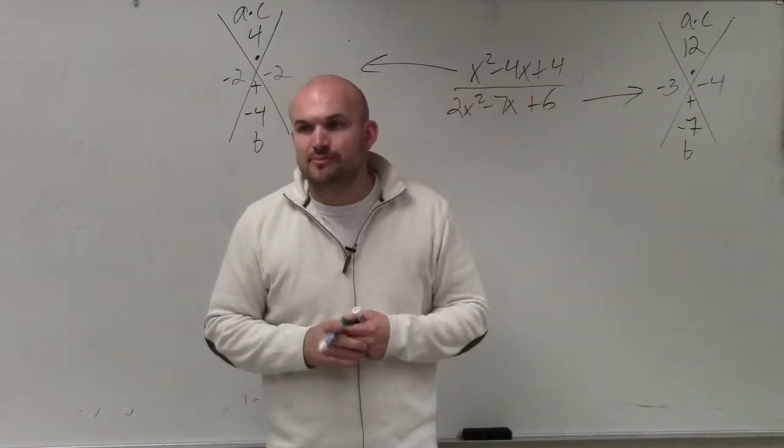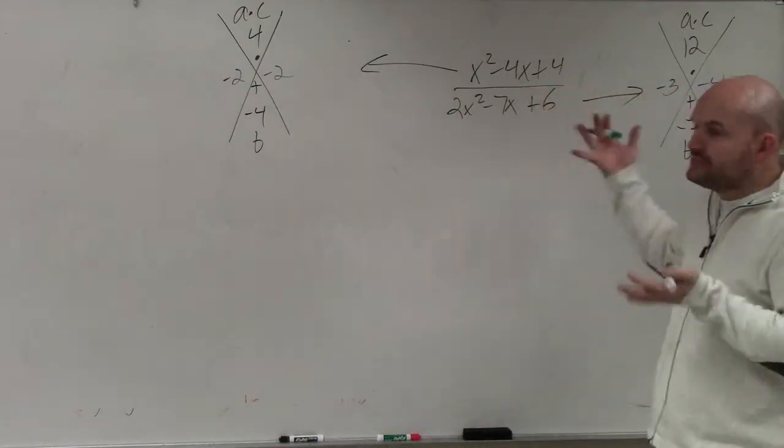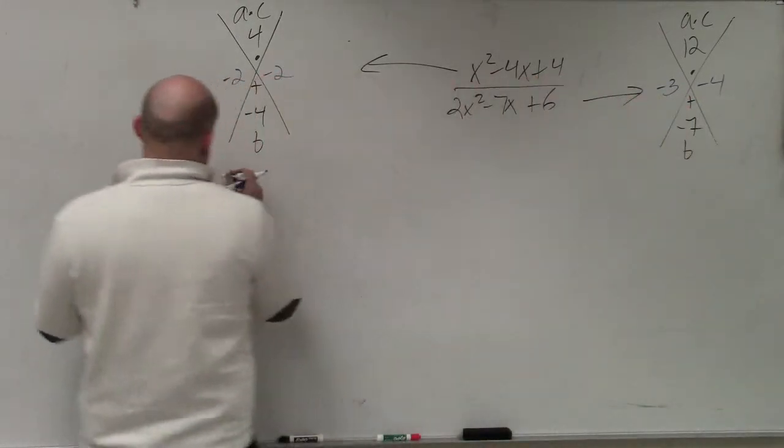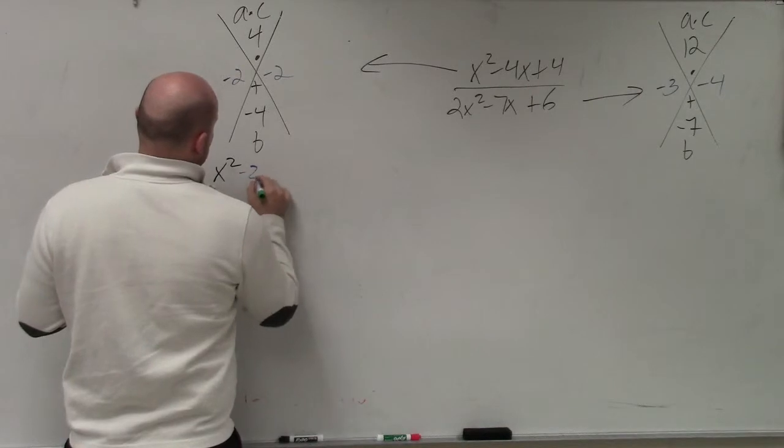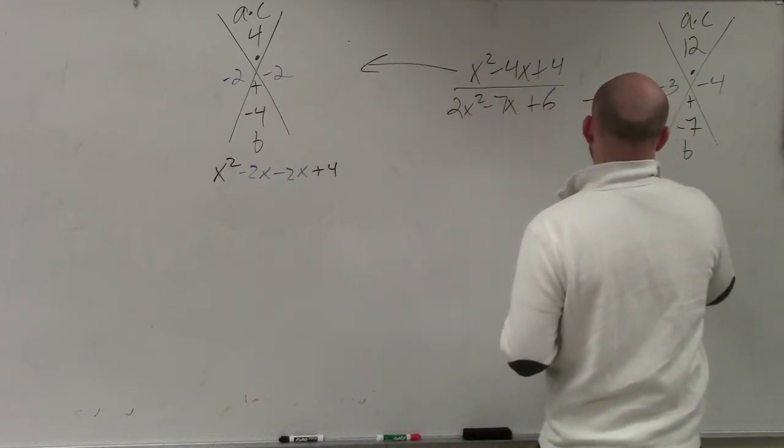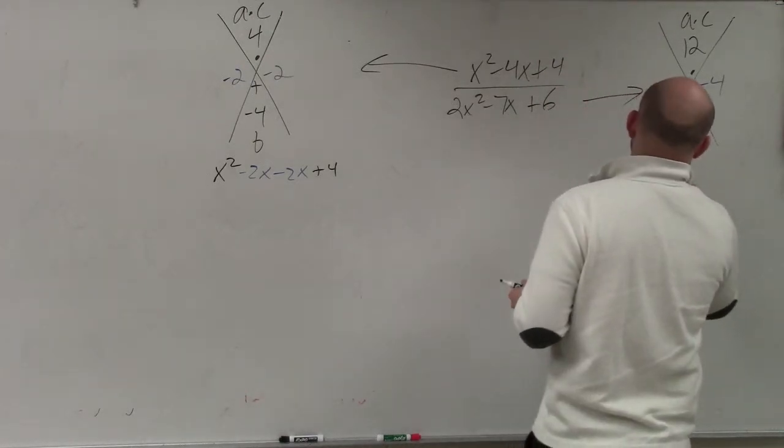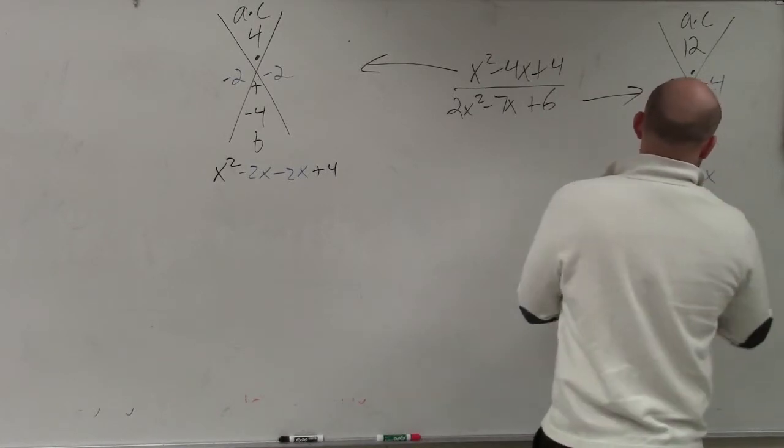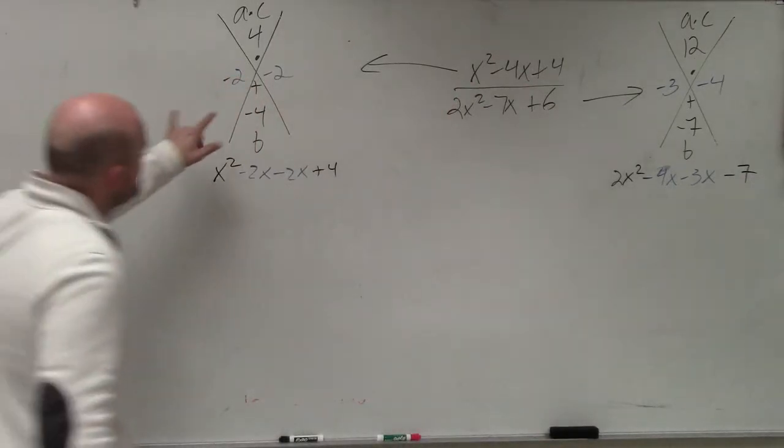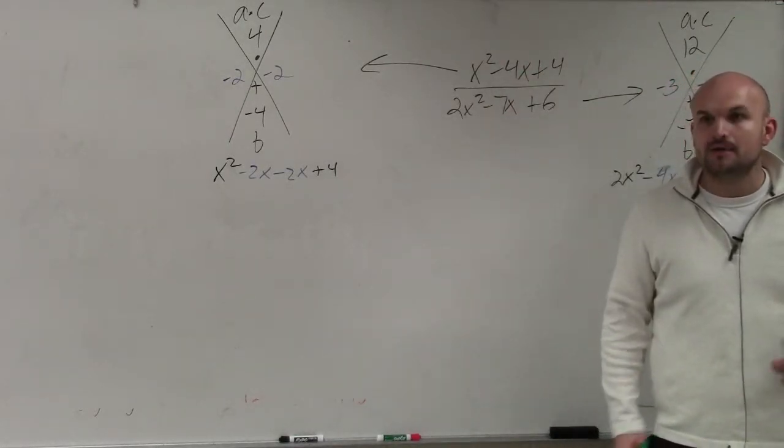So there's two different ways to kind of do this from here. Now, I'm going to show you the shortcut once we get to this problem. But I want you guys, again, to understand, why do we do this diamond method? Because basically, what this allows us to do now is for us to now rewrite the equations like this. x squared minus 2x minus 2x plus 4. Or in this one, I could write this as 2x squared minus 4x minus 3x plus 6. Does everybody see what I've done? I have now taken these terms that I've found, and I've replaced my middle terms for both of my trinomials. Does everybody see that? Because I'm trying to factor them.